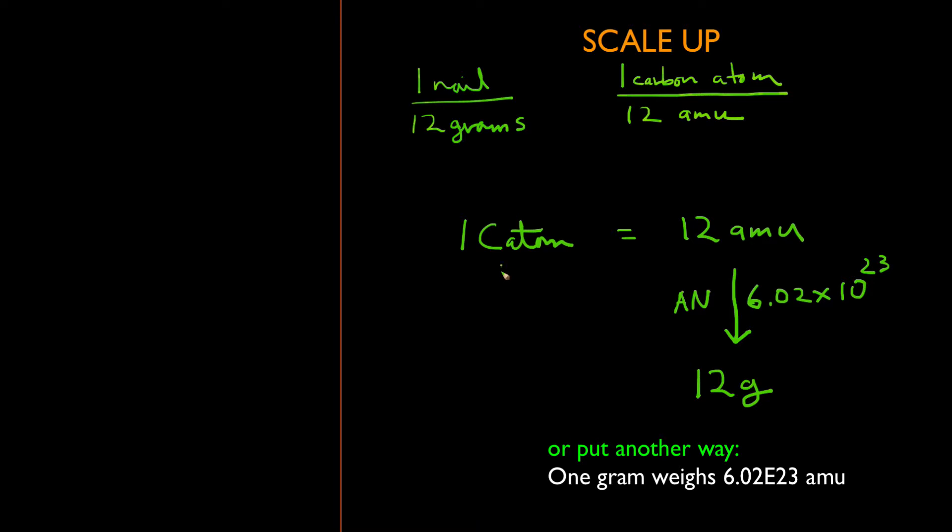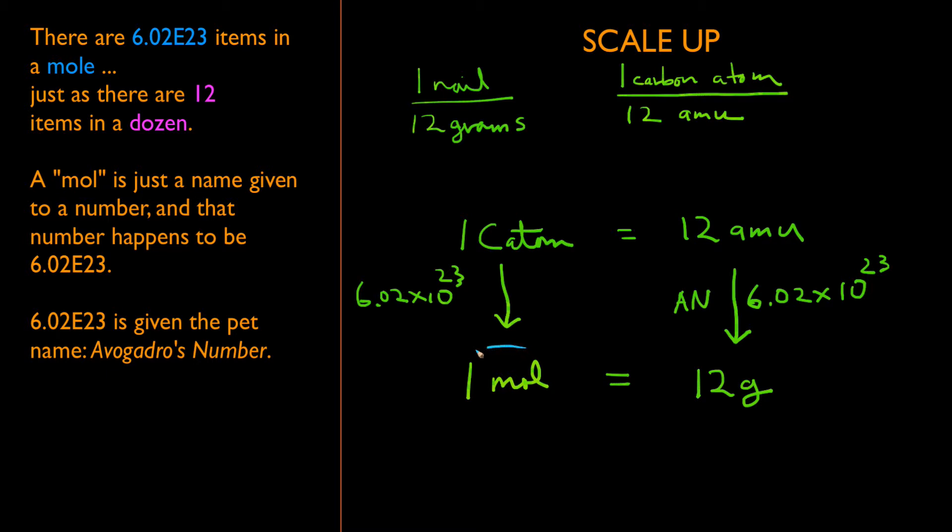But of course I no longer have one atom. I now also have 6.02 times 10 to the 23rd atoms according to my scale up, and 6.02 times 10 to the 23rd atoms, or anything for that matter, is called a mole. Don't be terribly disturbed by the fact that we are giving a rather large number, 6.02 times 10 to the 23rd, a name: one mole. Although this might seem a little uncomfortable, you are certainly comfortable with calling the number 12 by the word dozen.